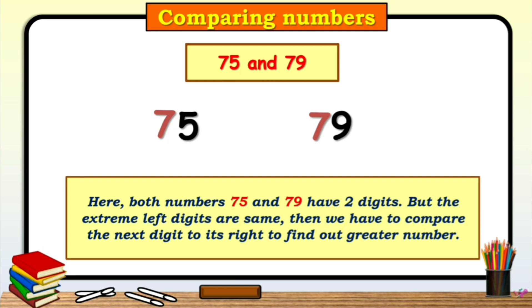So, the next digit of number 75 is 5 and the next digit of number 79 is 9. So, children, tell me, which digit is greater, 5 or 9? Yes, excellent. 9 is greater than 5. So, here number 79 is greater than 75.